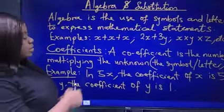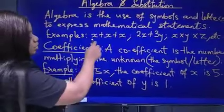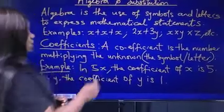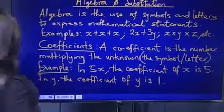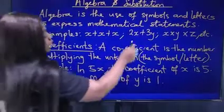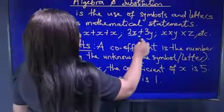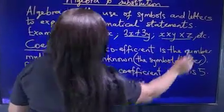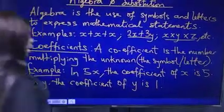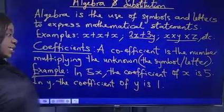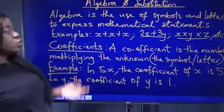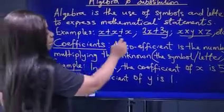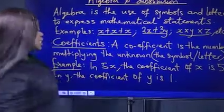Now these are examples of algebra. We have x plus x plus x. We have 2x plus 3y, and we have x times y times z. So those are examples of algebraic statements.